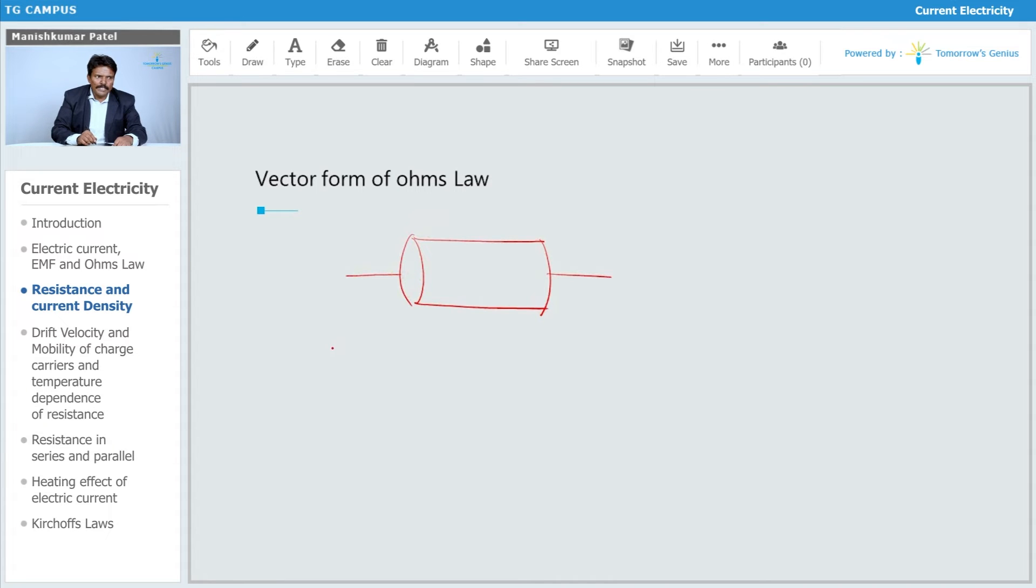We can say that E is equals to V upon L, or V is equals to E into L.